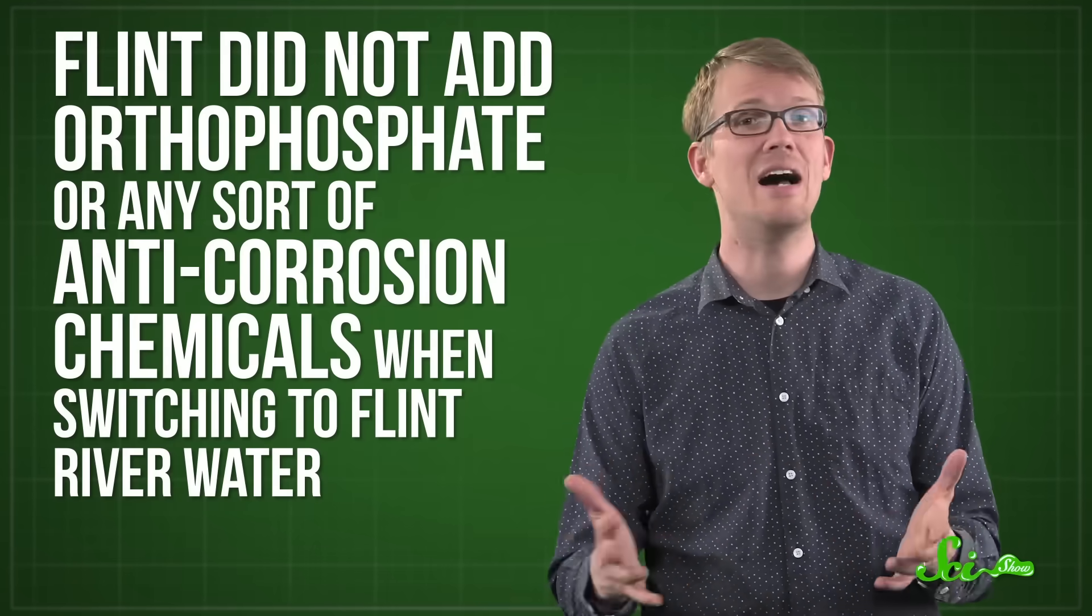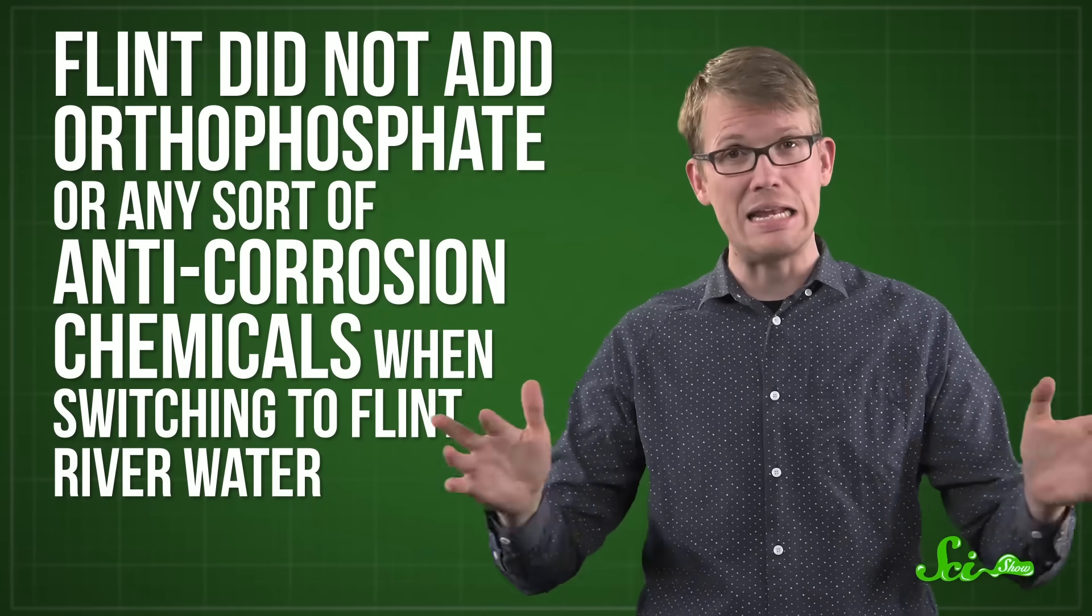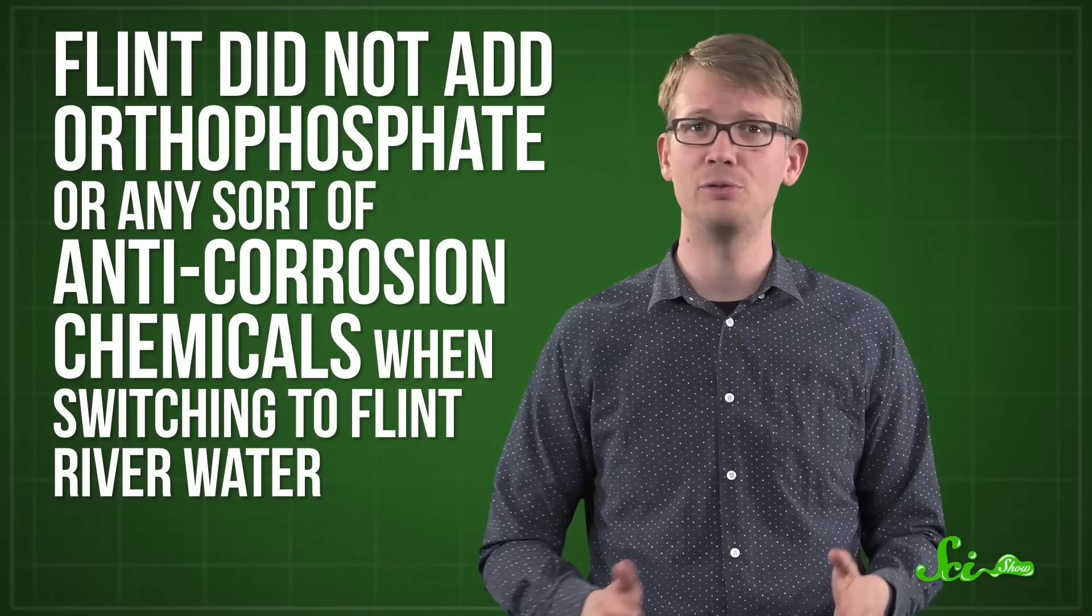Flint, and it is unclear why, besides possibly cutting costs, did not add orthophosphate or any sort of anti-corrosion chemicals when switching to Flint River water, even though the treated water from Detroit had had them. And because Flint was using iron and lead pipes, both iron and lead ended up in the water.